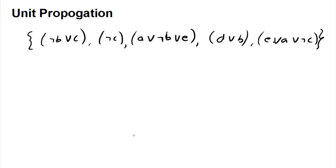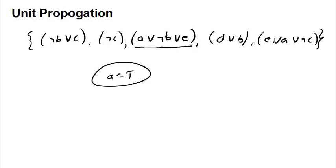One trick used in DPLL is unit propagation. Suppose we make A as true — then any clause containing A in uncomplemented (positive) form is immediately satisfied and can be removed. We are left only with clauses that do not contain A. For example, if A is set to true, several clauses get satisfied right away and we only need to continue with the remaining ones.